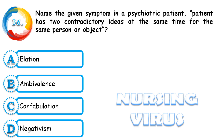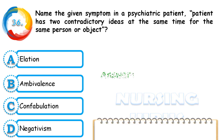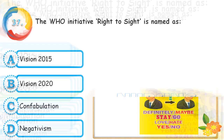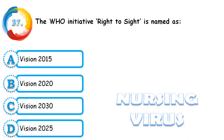Question 36: Name the given symptom in a psychiatric patient — the patient has two contradictory ideas at the same time for the same person or object. Options are elation, ambivalence, confabulation, and negativism. The correct answer is ambivalence, where the person has both positive and negative feelings toward the same person or object. Elation is an increased level of mood. Confabulation is when a person fills memory gaps with imaginary stories. Negativism is when a person frequently expresses negative thoughts.